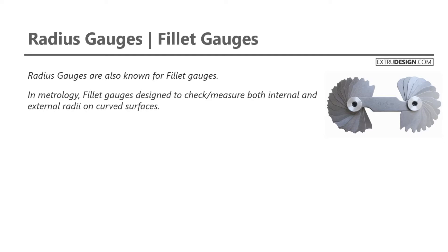In metrology, fillet gauges are designed to check and measure both the internal and external radii on curved surfaces. By the way, this is not a precision measuring instrument, rather it allows the user to quickly determine the fillet value.